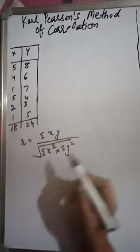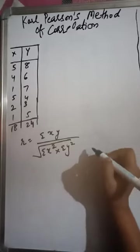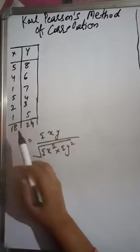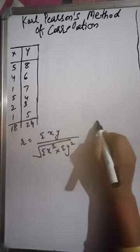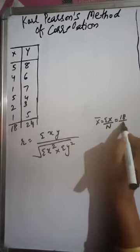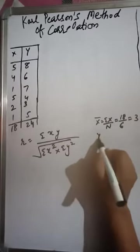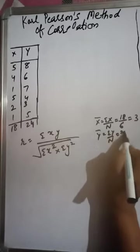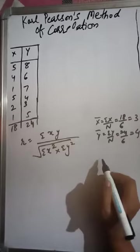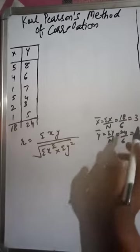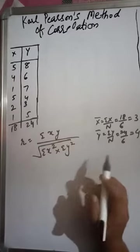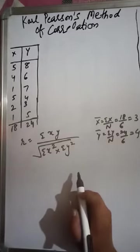To use the actual mean method, we need to find Σx and Σy. Here Σx is 18 and Σy is 24. So the mean of x is 18/6 = 3, and the mean of y is 24/6 = 4. Since these are whole numbers, we can conveniently use the actual mean method. If the mean were a fractional number, we would use the assumed mean method instead.